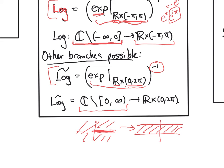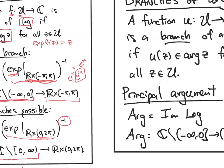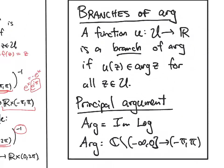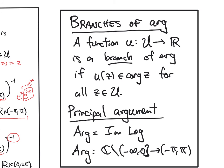We can define the same types of things for the argument. We can define branches of argument. So a function u on, say, an open set to the real numbers will be a branch of the argument if u(z) is an element of arg z for all z.